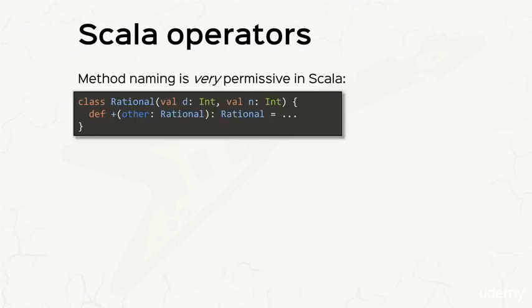Speaking of operators, Scala naming is very permissive when it comes to methods. Take a look at this block of code, where we define a class Rational, which you're probably familiar with already, but take a look at the method definition where the name is plus. This is actually a valid method name.